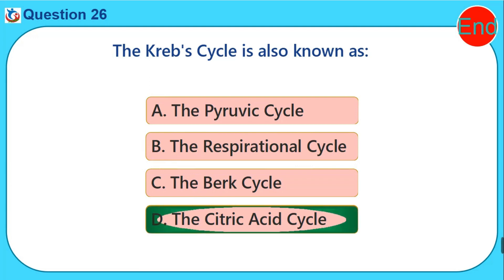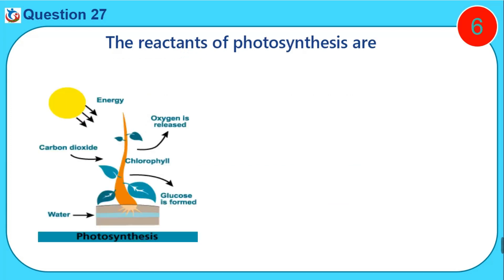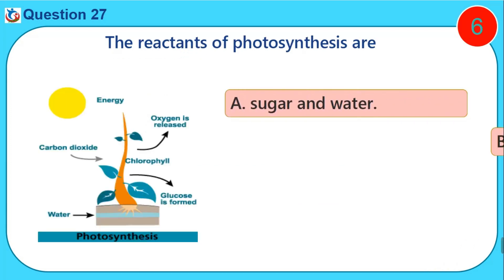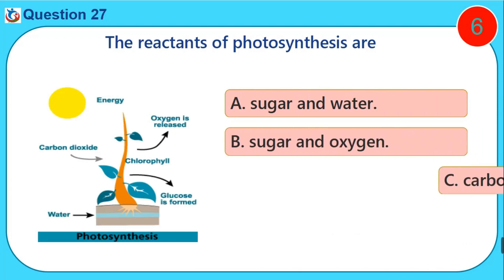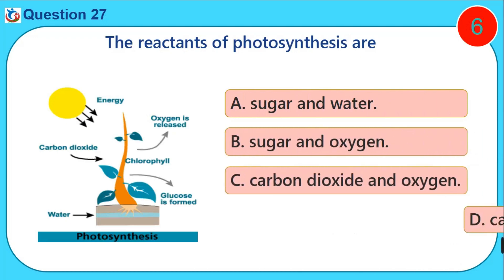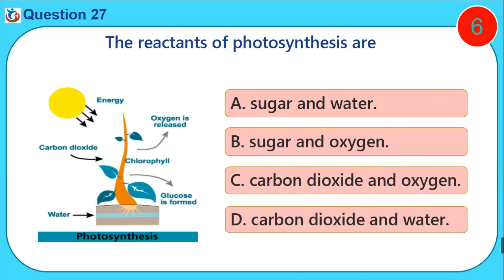The reactions of photosynthesis produce: A. Sugar and water. B. Sugar and oxygen. C. Carbon dioxide and oxygen. D. Carbon dioxide and water.